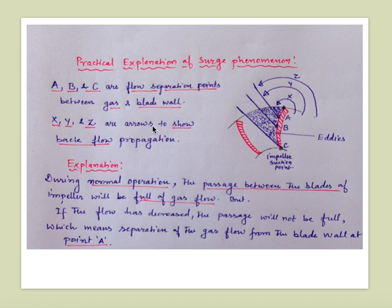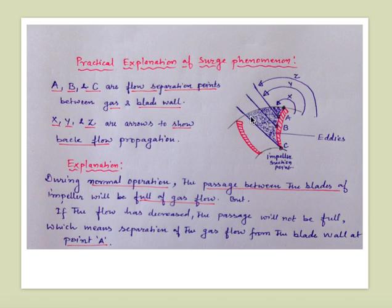X, Y, and Z are arrows showing backflow propagation. At point A, the empty space causes eddy formation and a low pressure region, represented by backflow amount X. At point B, the eddy formation and low pressure region from reduced gas flow is larger, represented by backflow Y. At point C, an even bigger empty portion with eddy formation and reduced pressure region exists, represented by backflow amount Z.